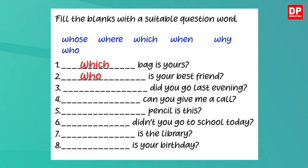What about the third one? Blank did you go last evening? Here the WH question word needed should ask for a place. What is the suitable question word? It's 'where.' Where did you go last evening?